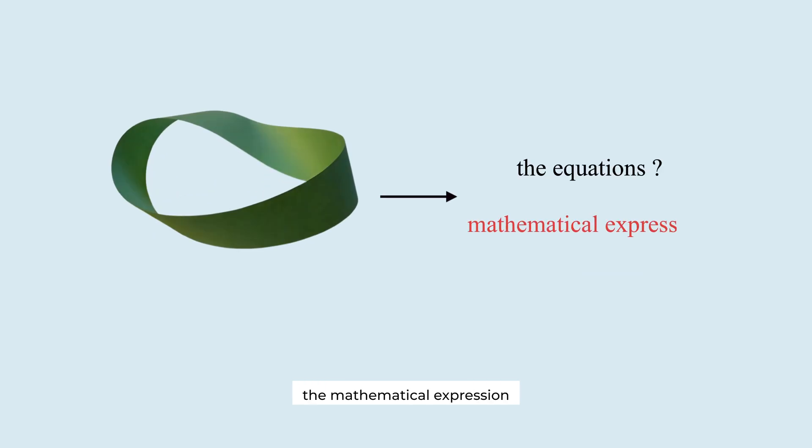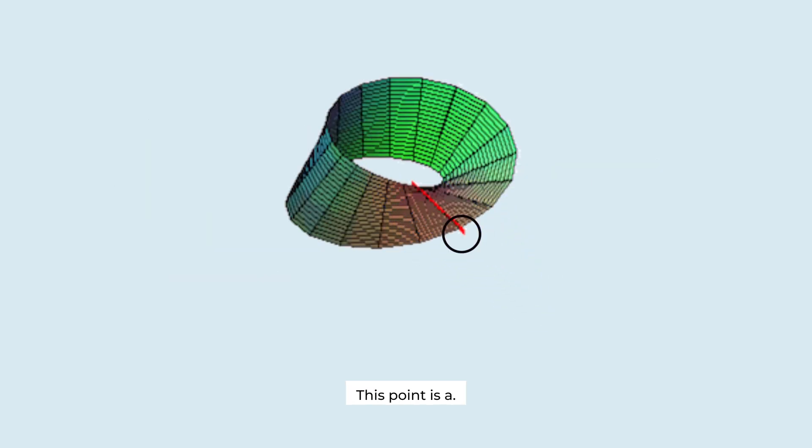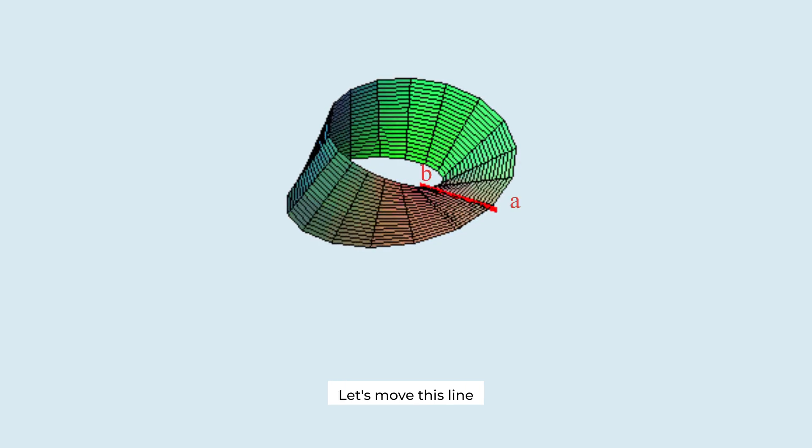We need to find the mathematical expression that describes every point on the strip. Remember the Möbius strip includes not just the boundary but also the entire surface. Here is a line segment. This point is A. This point is B. Let's move this line along the strip.